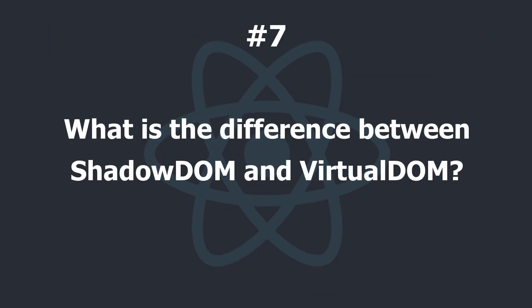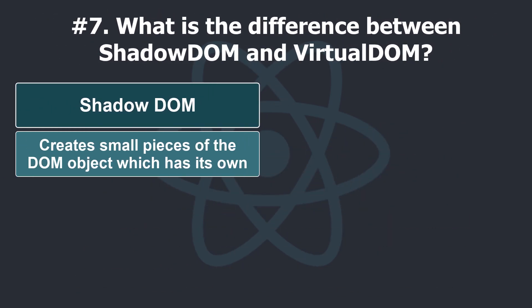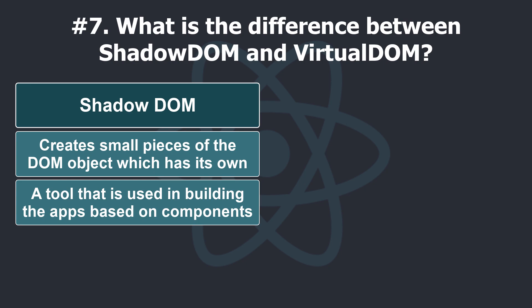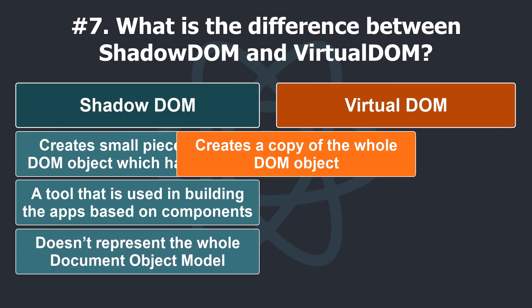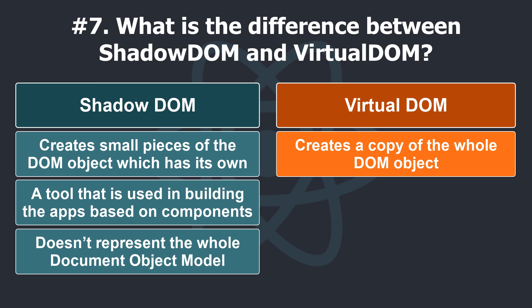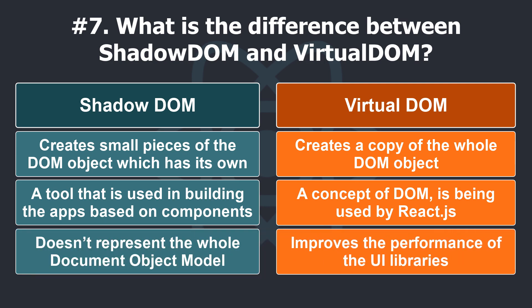What is the difference between Shadow DOM and Virtual DOM? Shadow DOM creates small pieces of the DOM object which have their own isolated scope. It's a tool used in building apps and websites based on components — it comes in small pieces and doesn't represent the whole document object model. Virtual DOM creates a copy of the whole DOM object. It's a concept used by React.js to improve the performance of UI libraries.